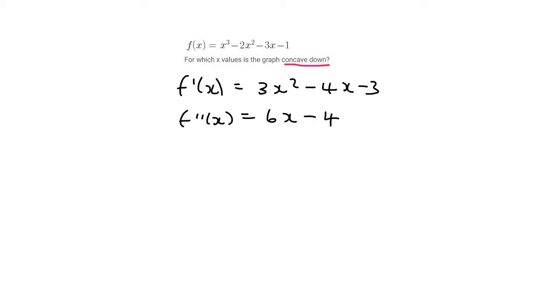Now, we want to make that negative, so we say 6x minus 4, and we want that to be negative, and then you just solve. So you take the 4 over, you divide by 6, and you eventually would end up with x must be less than 2 over 3.